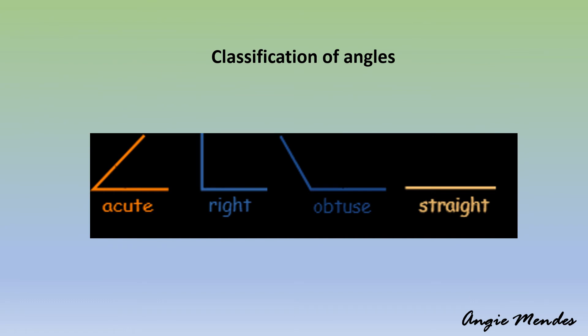Now that you know how to name angles, let us see how angles are classified. Angles are classified based on their size or based on their degree measure. Based on their degree measure, angles are classified as acute angles, right angles, obtuse angles, or straight angles.